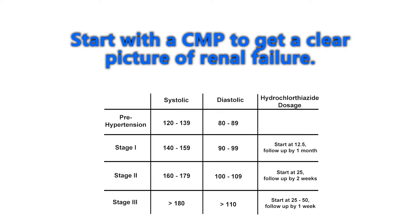If they have stage three hypertension — systolic greater than 180 or diastolic greater than 110 — start at 25 to 50 milligrams of hydrochlorothiazide, depending on whether you're starting two drugs simultaneously. At stage three, it may be wise to start two medications at the same time, such as an ACE inhibitor and a thiazide diuretic. Given the severity, you'd want to see them back within one week.